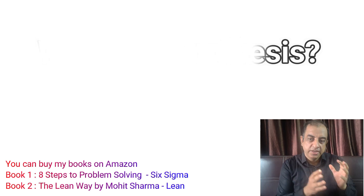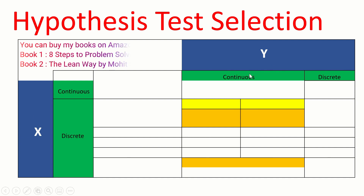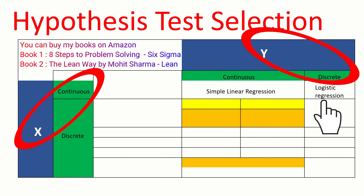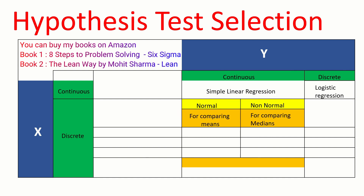When we fail to reject the null hypothesis, the p-value of the test should be greater than 0.05. Now let us understand how to select a hypothesis test. The hypothesis test depends upon the type of data we are working with. In hypothesis testing we have project Y and X. Our Y could be continuous or discrete and our X could also be continuous or discrete. When Y is continuous and X is also continuous, we use simple linear regression. When Y is discrete and X is continuous, we use logistic regression. Continuous Y could be normal or non-normal.